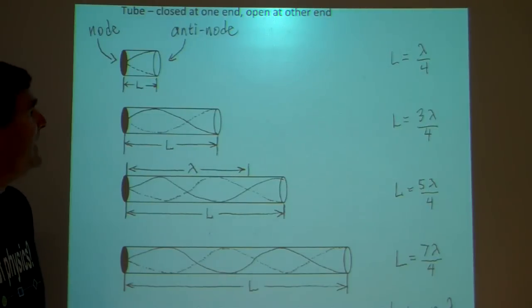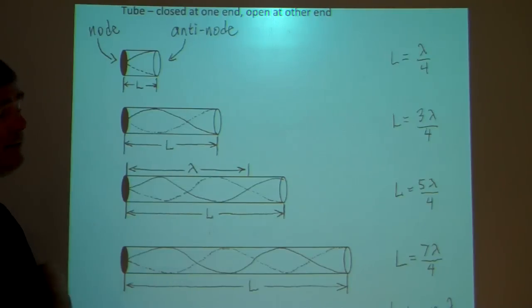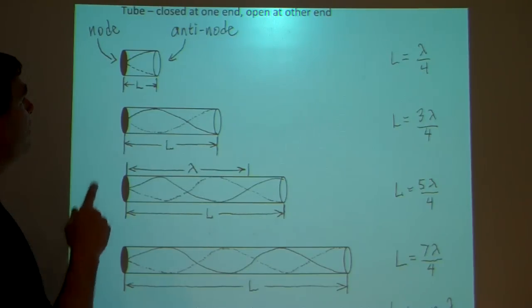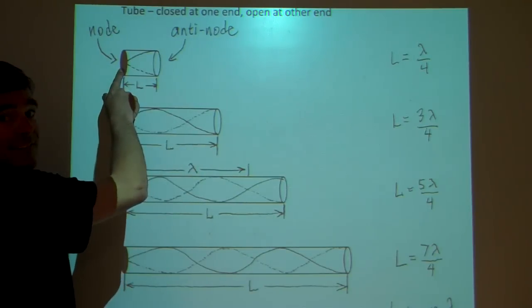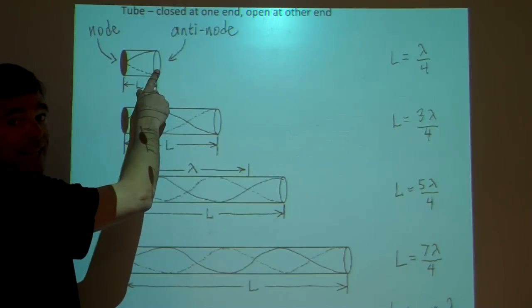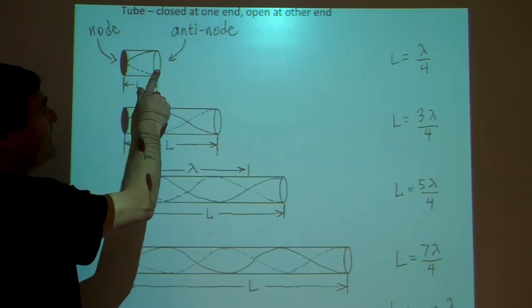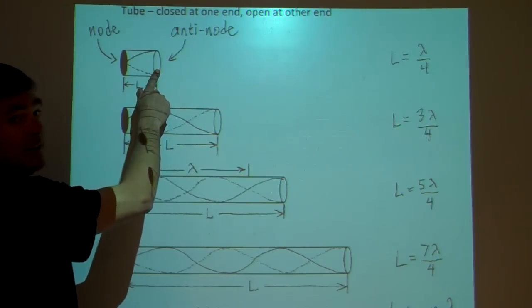What is happening when we hear the increase in volume? It happens when a standing wave is produced inside the tube. There are two requirements for a standing wave to occur. The first requirement is that there be a node at the closed end of the tube, and the second requirement is that there be an anti-node at the open end of the tube. That can only occur for a given wavelength at certain lengths of the tube.